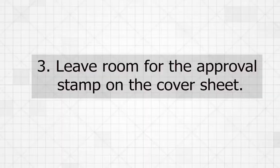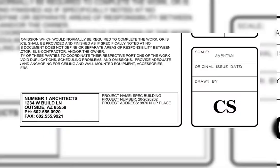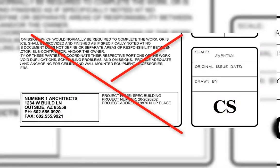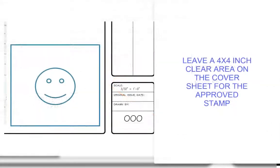Third, you must leave room for the approval stamp on the cover sheet. Customers often submit plans that look like this, but there's no place for the stamp. Without the stamp, the permit will not be issued. Leave a 4x4 inch clear area on the cover sheet for this stamp. This helps your review move efficiently without unnecessary delays.